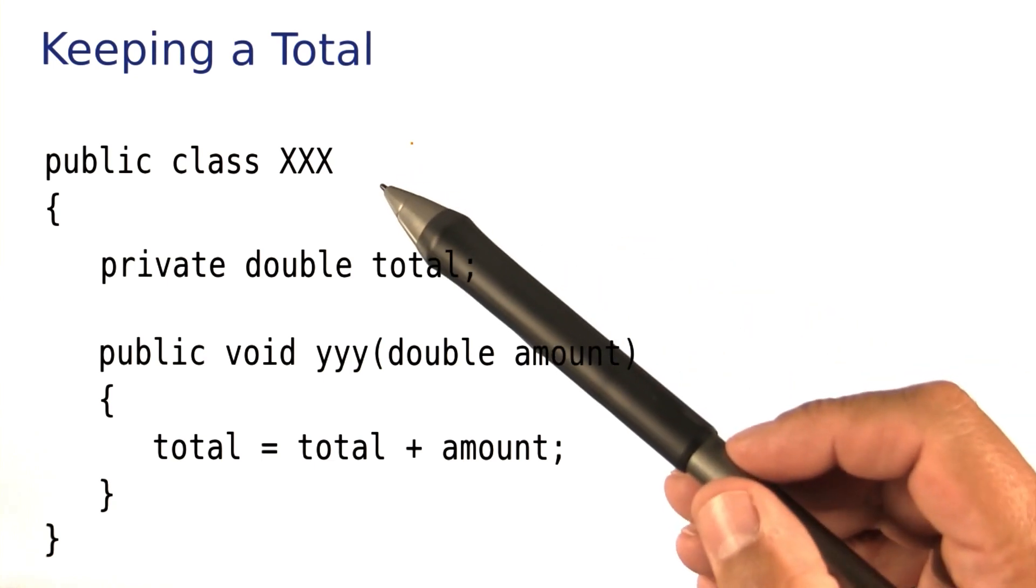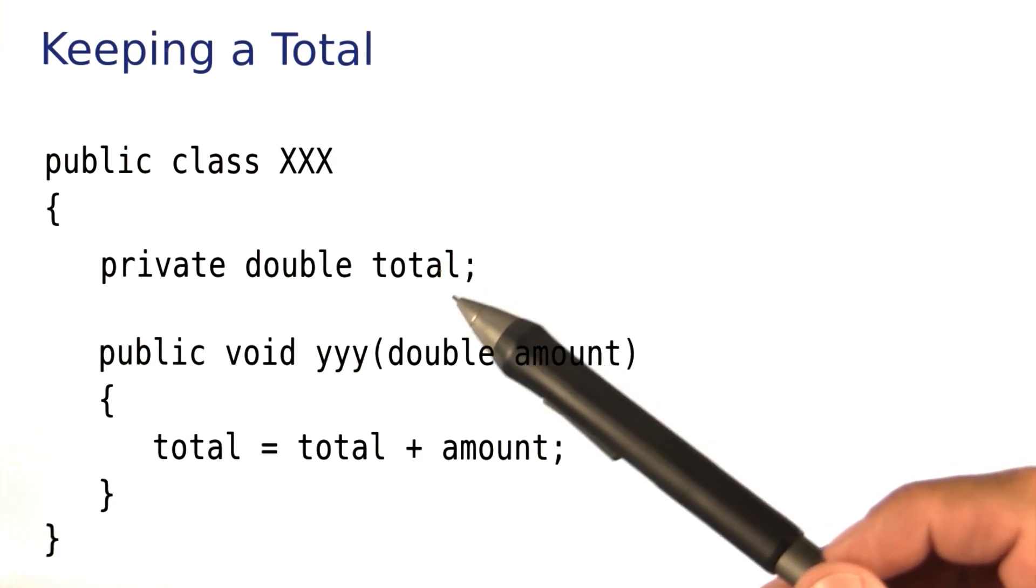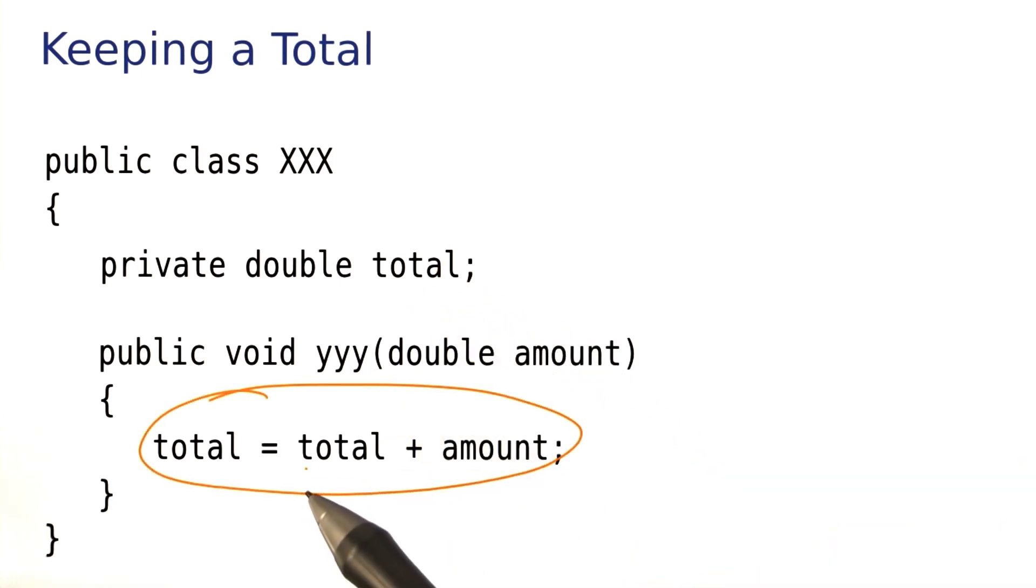So, there are lots of times where you have some class, and you have some variable, which may be called total or not. And then there are some methods that add to the total, maybe some methods that clear the total or subtract from it.